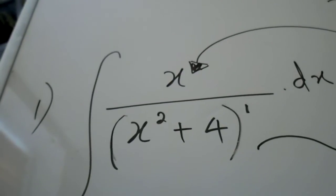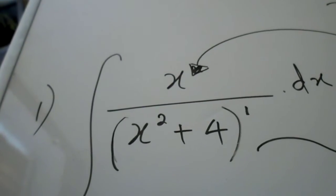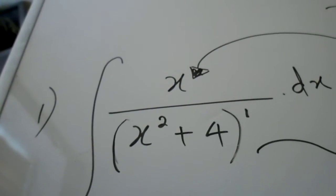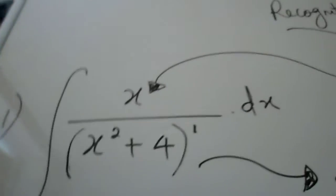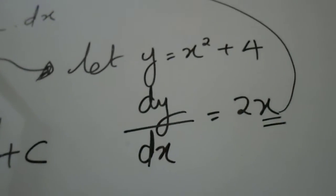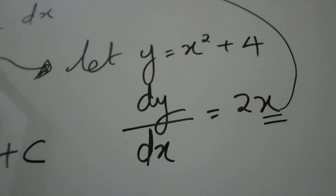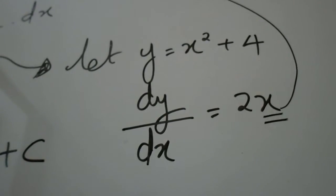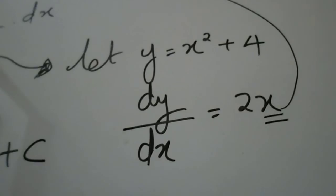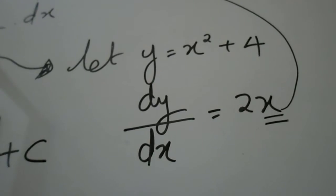Now what you'll do is the next step is for you to equate the denominator to y. So you're going to say let y be equal to x squared plus 4. You need to now differentiate y and you'll get dy by dx equals 2x.